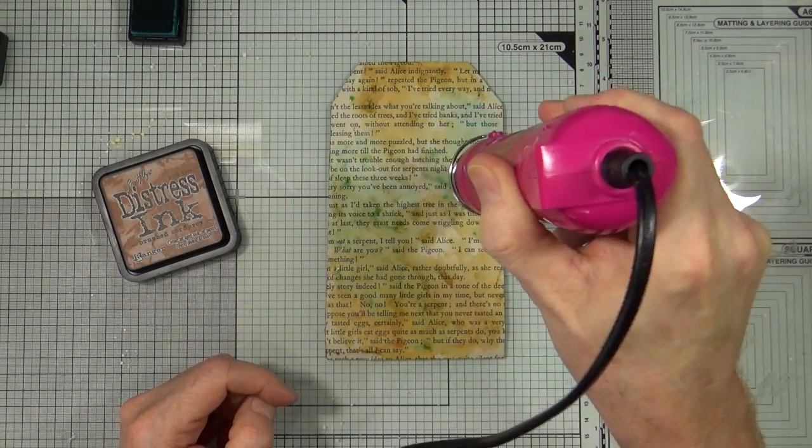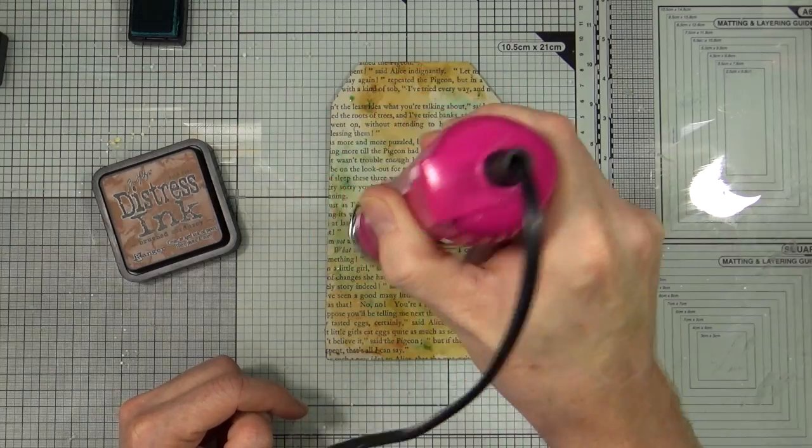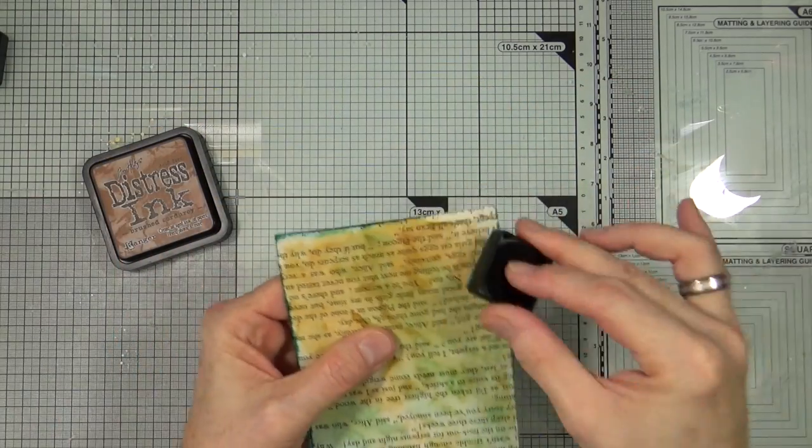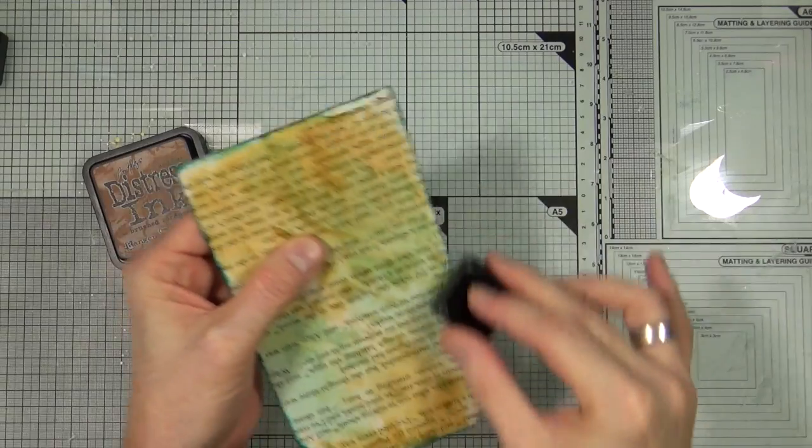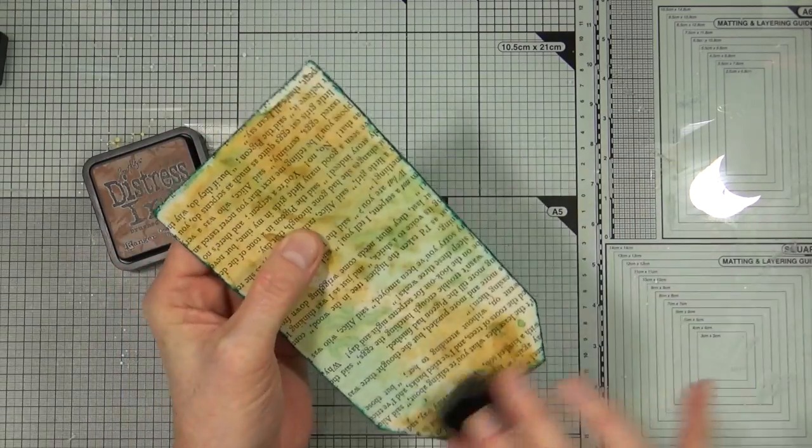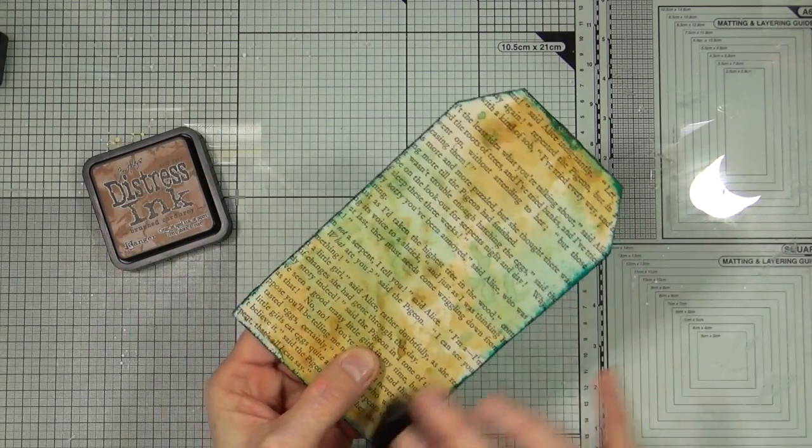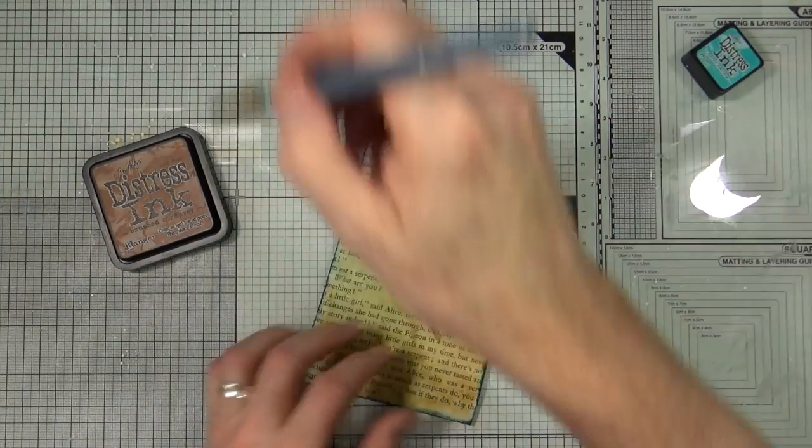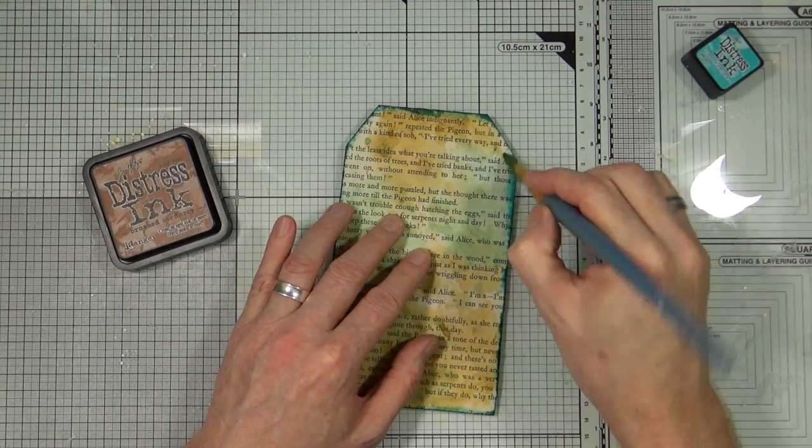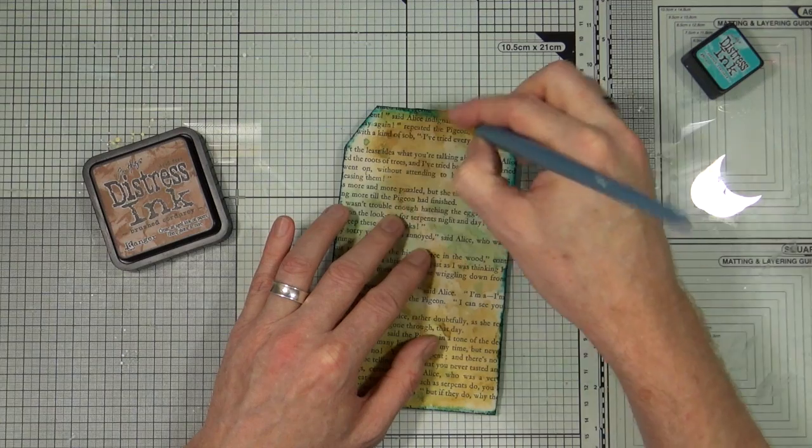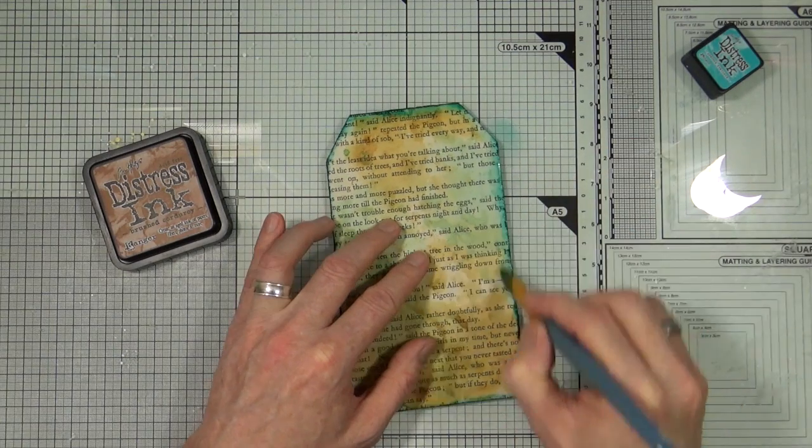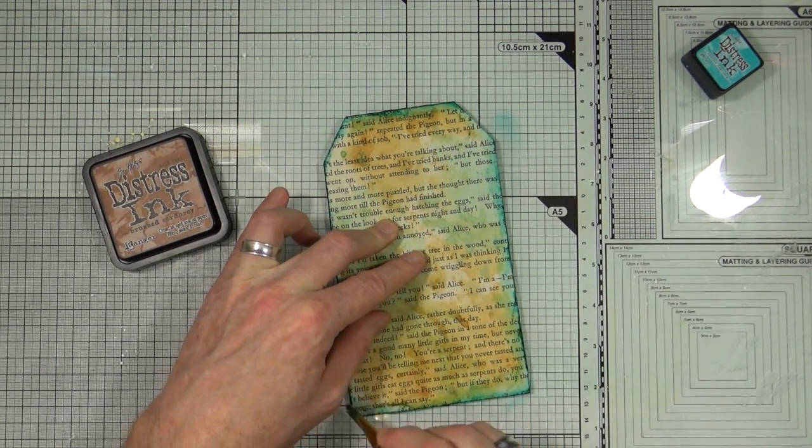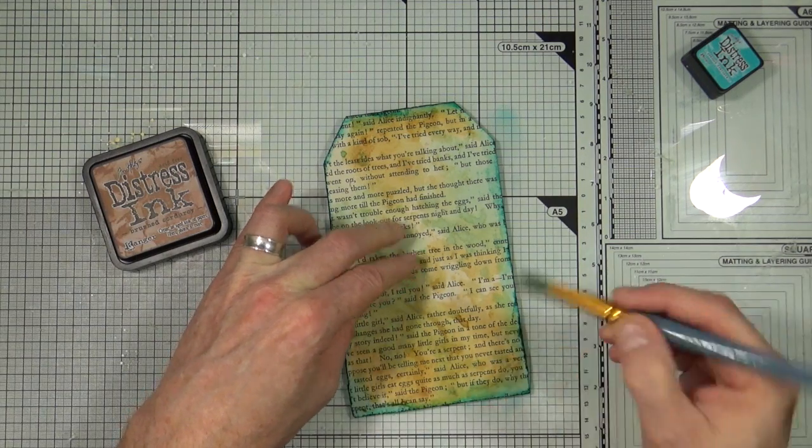I want to add a little bit more color to the edges of the tag, so I'm just rubbing that distress ink around the edges. I'm going to grab a small paintbrush with a little bit of water on and then I'm going to just activate that water-based ink a little bit, just to blend the color from around the edges into the tag a little bit more, so it just softens those edges and makes it a little bit more cohesive.